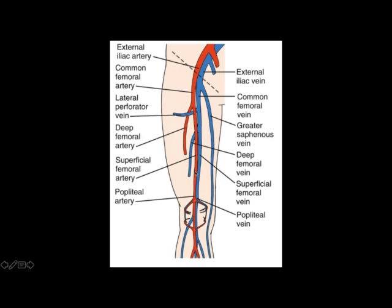The superficial femoral artery then continues along beside the superficial femoral vein until the level of the popliteal fossa, where it gives rise to the popliteal artery. You can see this artery at our final fifth point of interrogation, where it lies deep to the popliteal vein.